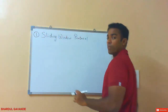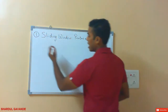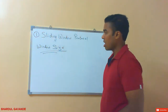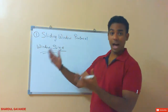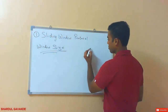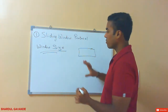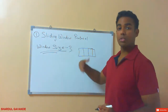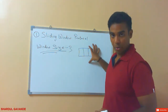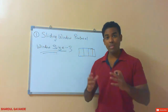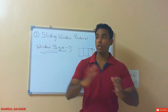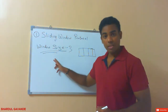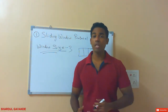Before starting with the sliding window protocol, let us first understand what is a window size — this is the most important term. Window size means the size of the window. If the window size is 3, that means we can send only 3 packets; if it is 4, then 4 packets will be sent. So the window size basically says how much data will be transmitted from the sender to the receiver's end. The window size may differ at the sender and the receiver — for example, the sender's window size could be 4 and the receiver's window size could be 1.